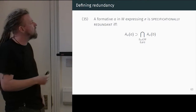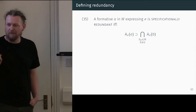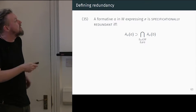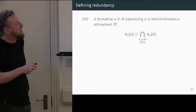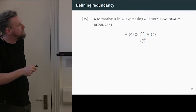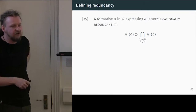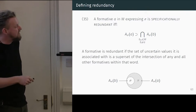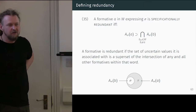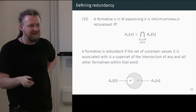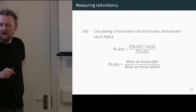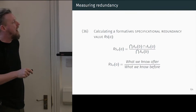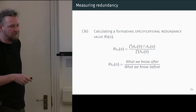Things get a bit more complicated when talking about specificational redundancy, which is in many ways the exact opposite. For specificational redundancy, a formative A is considered redundant if the set of A-Sigma relations — its uncertainty set of features — is a superset of the intersection of all other feature values in the word. So in this case, it's the big one that's redundant: the one that's unsure between dual and plural that occurs with the plural is the more redundant one. We model this as what we know after including everything over what we knew before.